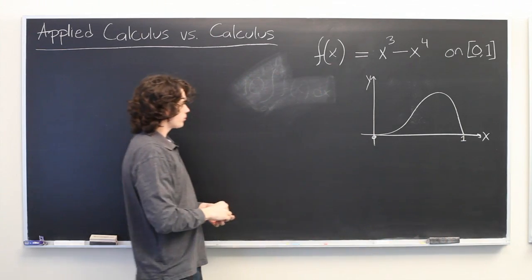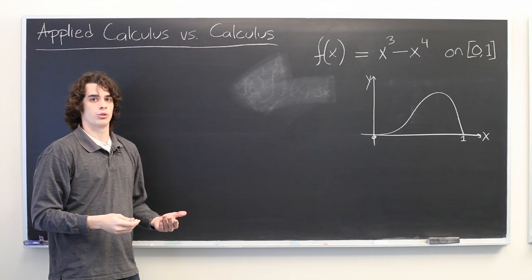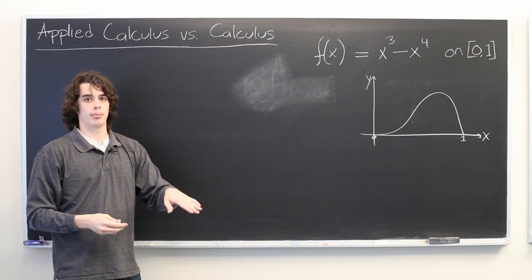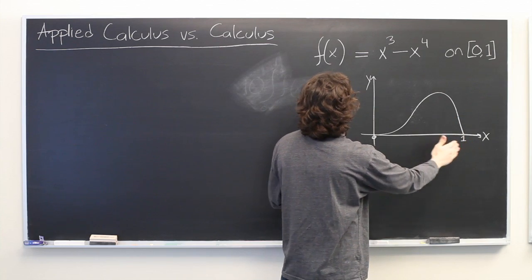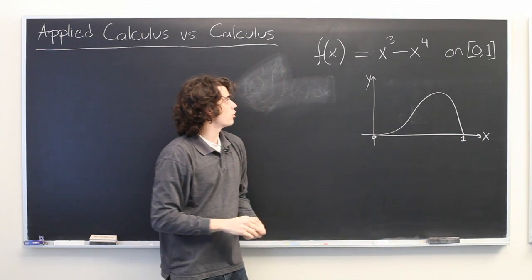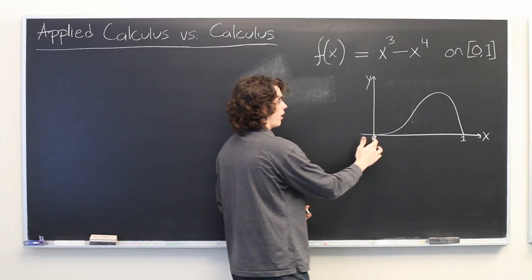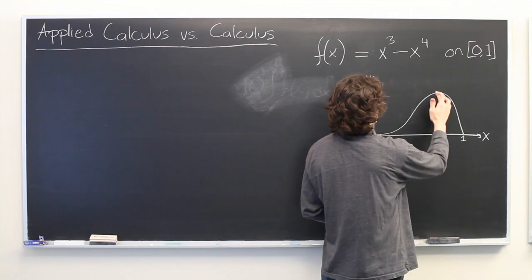Suppose that we were told that a team of engineers were designing a new form of speed bump. And the contour of the speed bump was modeled by this curve, x cubed minus x to the fourth, where x is in feet and y is in feet.